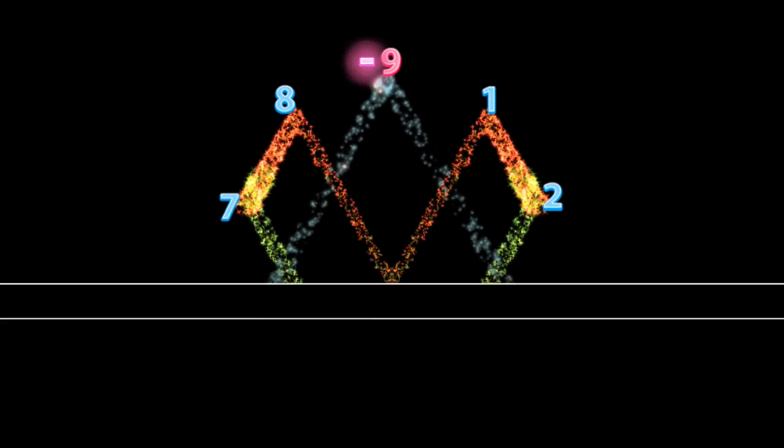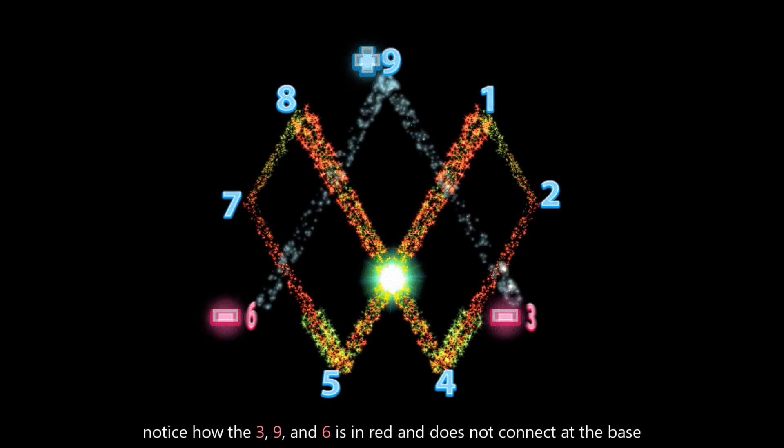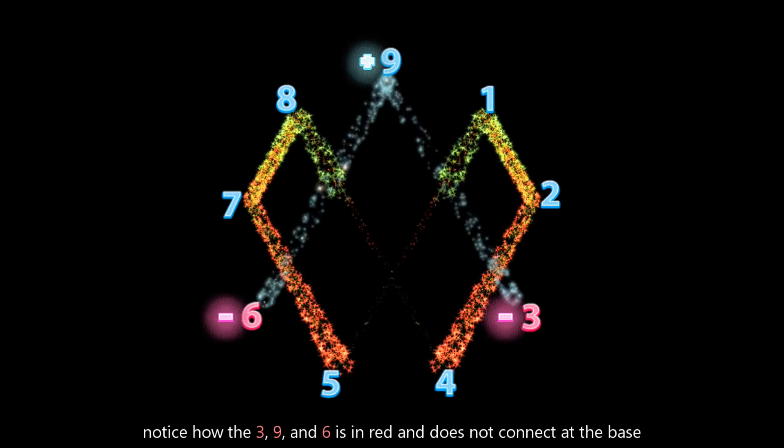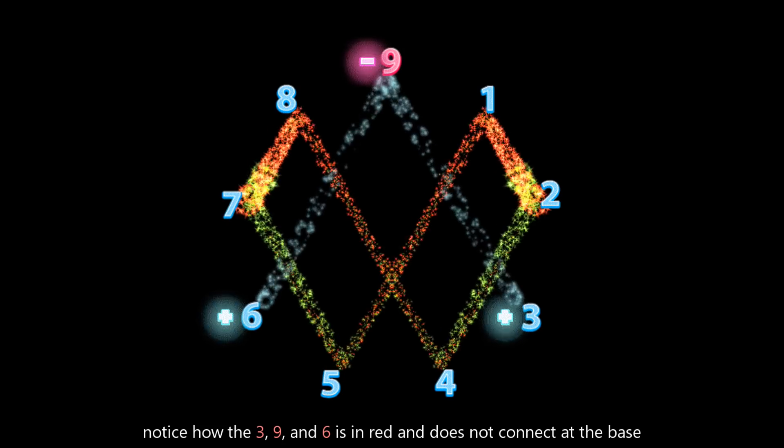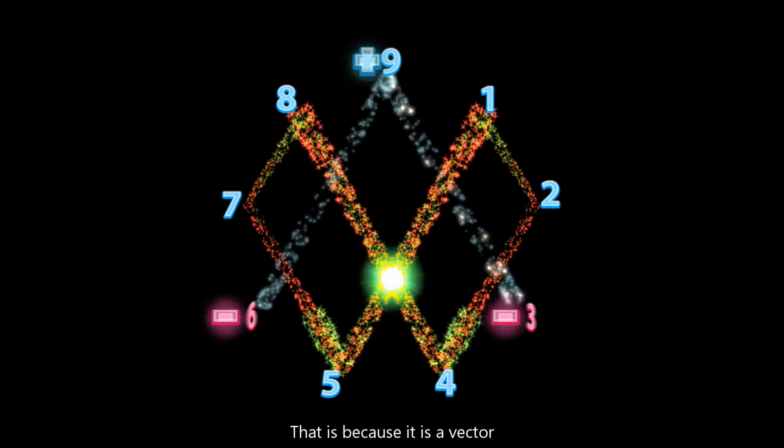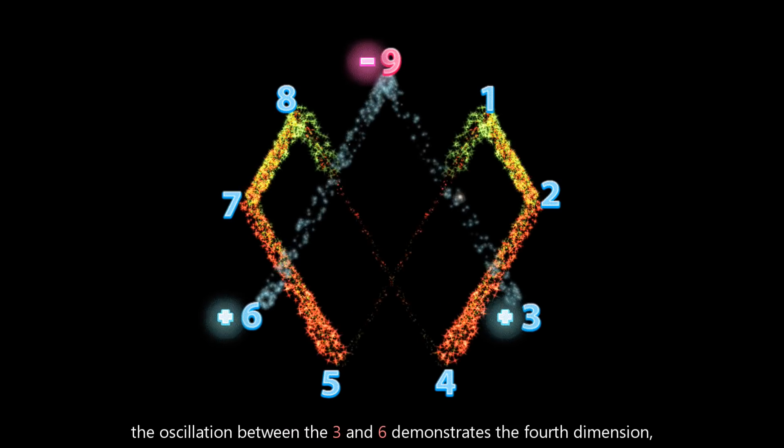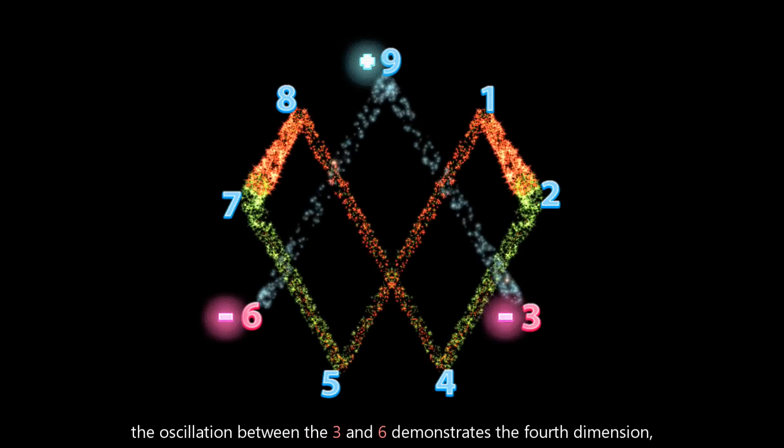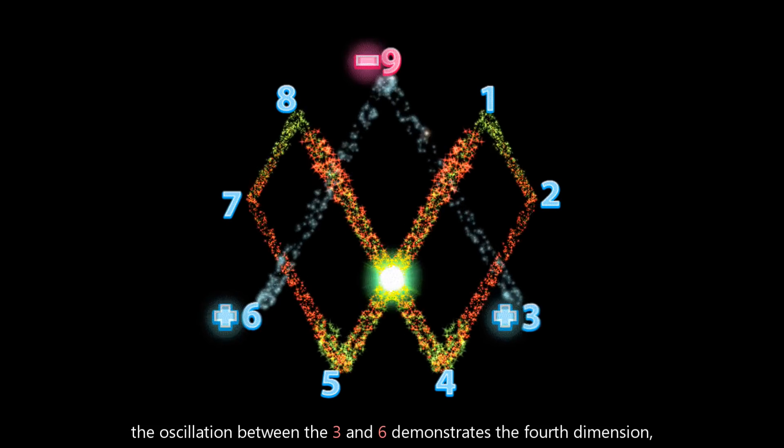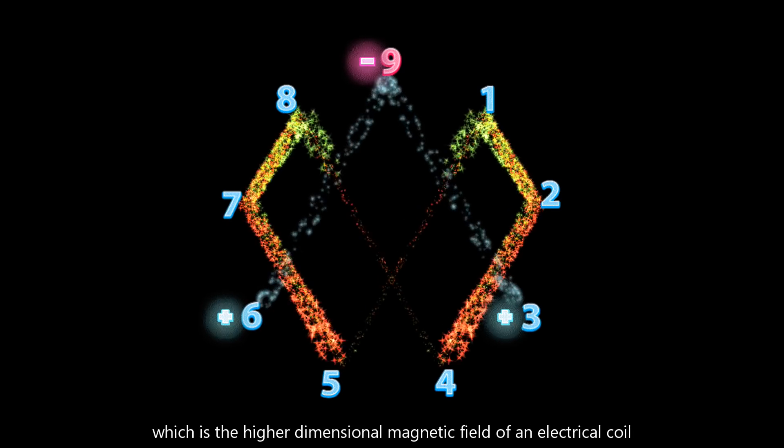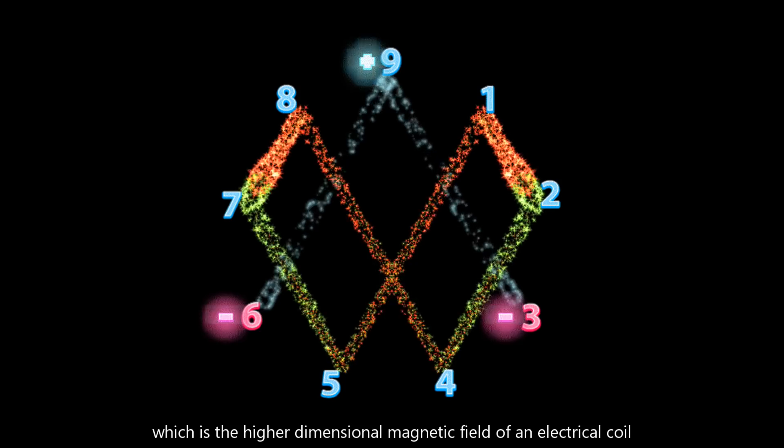On the mathematical fingerprint of God, notice how the 3, 9, and 6 is in red, and does not connect at the base. This is because it is a vector. The 1, 2, 4, 8, 7, 5 is the third dimension, while the oscillation between the 3 and 6 demonstrates the fourth dimension, which is the higher dimensional magnetic field of an electrical coil.